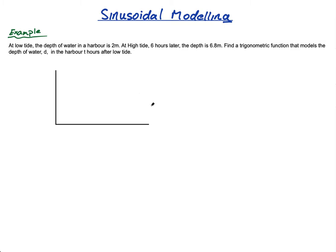The x-axis is going to be time in hours and the y-axis is going to be the depth of the water. At low tide the depth is 2 meters, so let's draw that 2-meter line. At high tide, 6 hours later, the depth is 6.8 meters — that's 2, 4, 6, 6.8 on the y-axis.